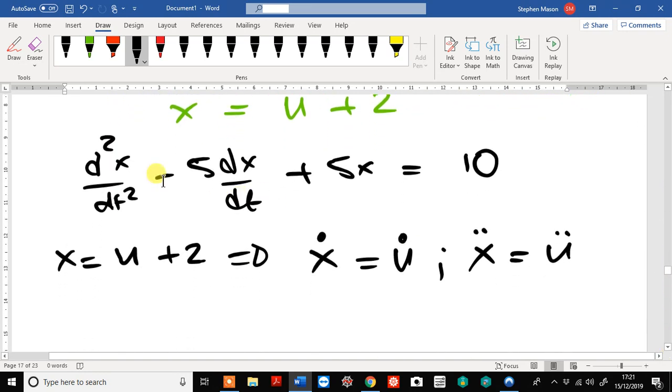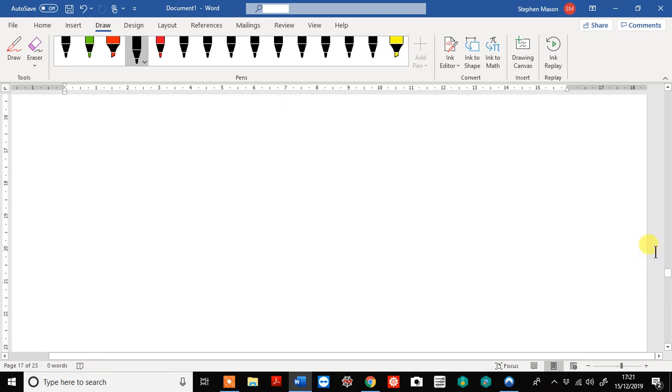So, if we go back to our equation here, we'll have u double dot substituted for the d squared x by dt squared. We'll have a minus 5u dot plus 5u equals 10, but we'll have 5 times u plus 2 equals 10. Let's write that down.